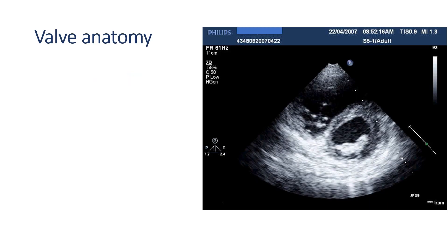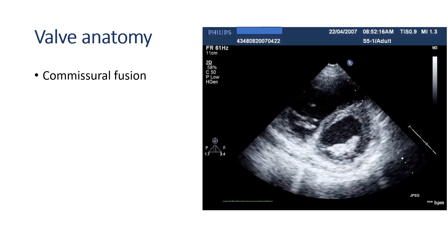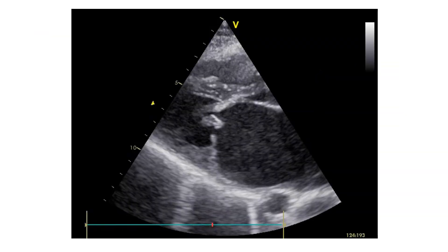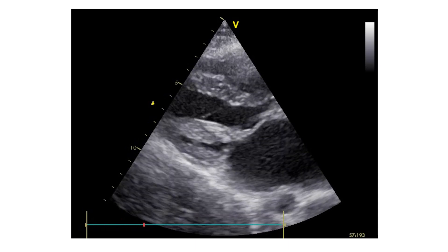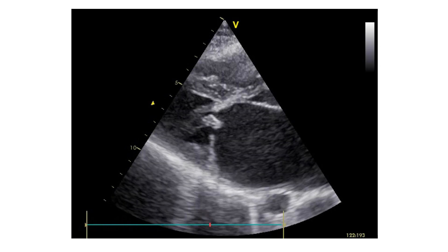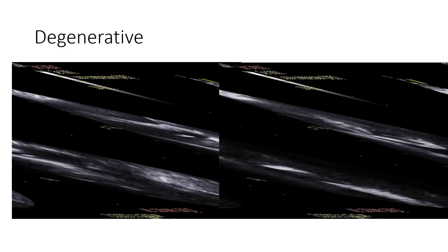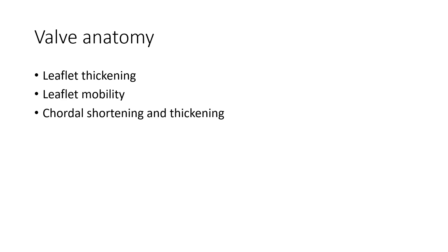Other methods for assessment of mitral valve area that are less frequently used are the continuity equation and the PISA method. The evaluation of valve anatomy is very important because of its implication on decision-making about intervention. Commissural fusion is an important feature to distinguish rheumatic from degenerative mitral stenosis. Complete fusion of both commissures usually indicates severe rheumatic MS, although sometimes severe rheumatic MS can be due to valve rigidity, shortening, and subchordal fusion despite open commissures — usually seen in rheumatic stenosis after previous commissarotomy. Important information about valve anatomy includes leaflet thickening, leaflet mobility, shortening and thickening of the chordal structures, and calcification.